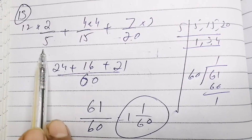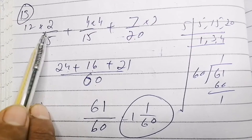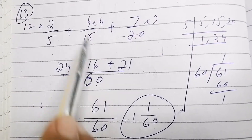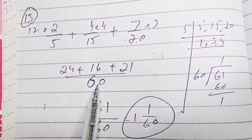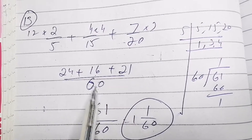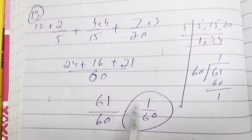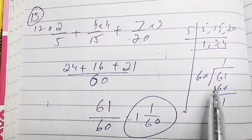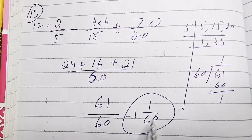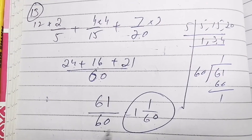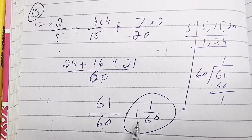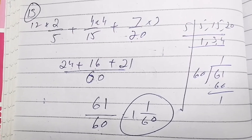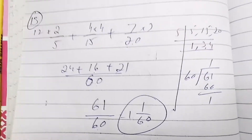The LCM of 5, 15, and 20 is 60. So: 5 into 12 is 60, 2 into 24 is 24; 15 into 4 is 60, 4 into 16 is 16; 20 into 3 is 60, 7 into 21 is 21. Adding these, we get 61 over 60. Dividing 61 over 60 gives 1 whole 1 over 60.